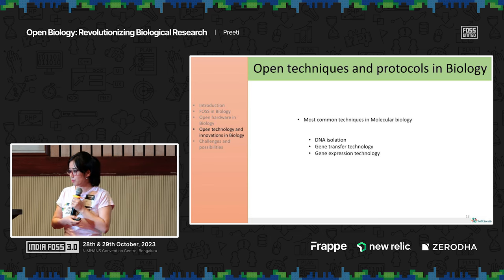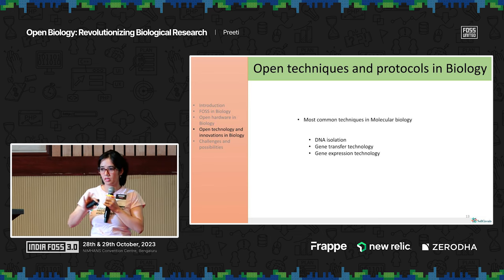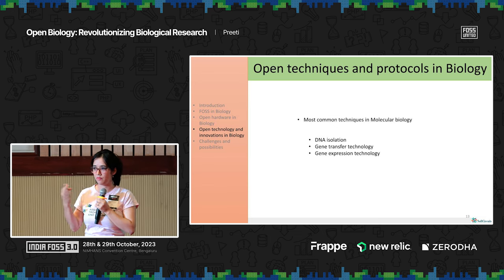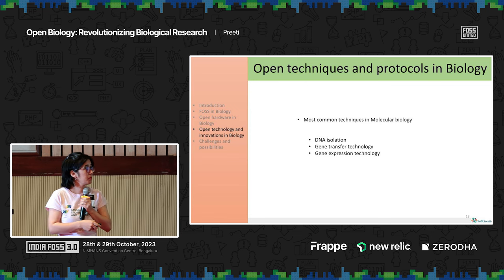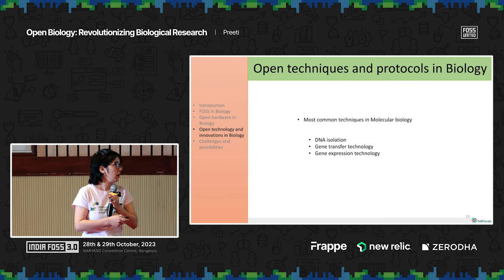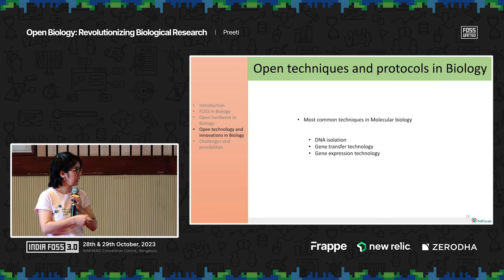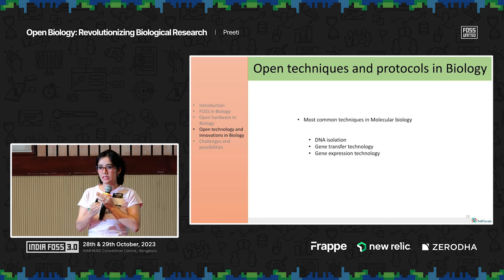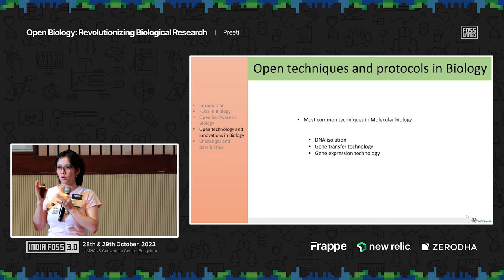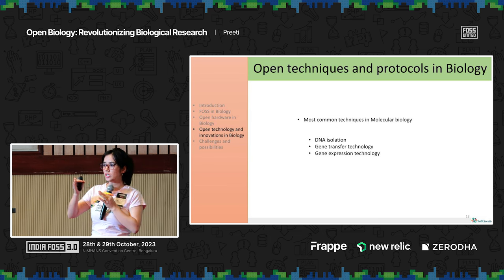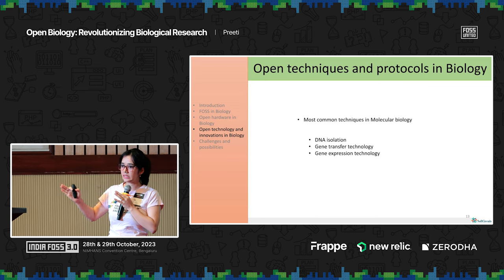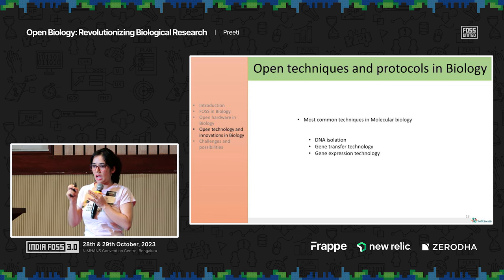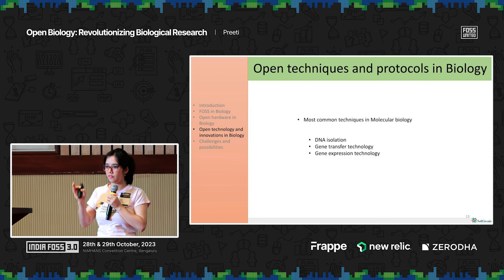Moving on to open technology. In ecology and evolution, most of the techniques and protocols are free — we don't have patented technology as such. But molecular biology people have tons of techniques which are patented and closed source: DNA isolation, gene transfer technology, gene expression technology — anything in molecular biology, from identifying a gene to understanding its function and fixing problems with it. Every step requires dependence on software, hardware, or techniques and tools that are not freely available.